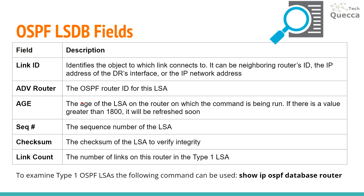Age is the age of the LSA on the router on which the command is being run. If there is a value greater than 1800, it will be refreshed soon. Sequence number is the sequence number of the LSA. Checksum is the checksum of the LSA to verify its integrity. Link count is the number of links on this router in the type 1 LSA.